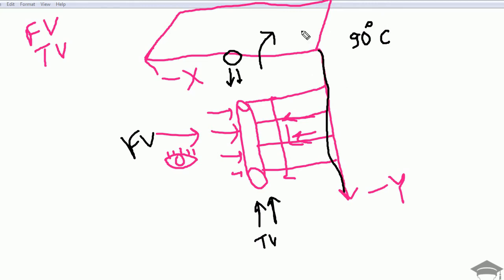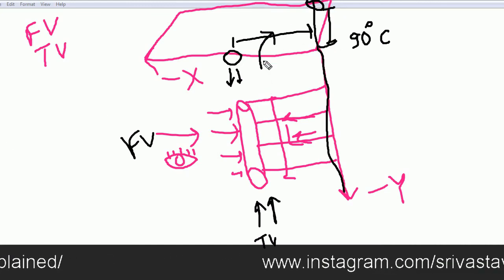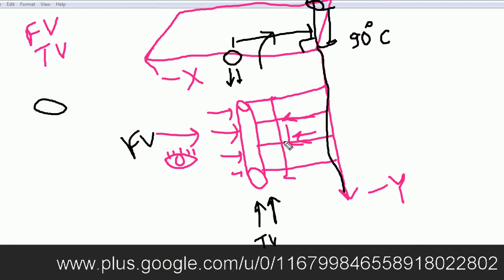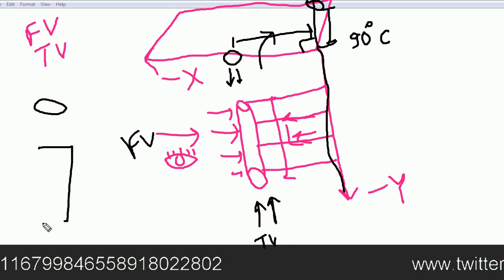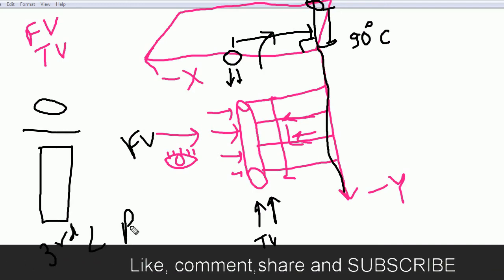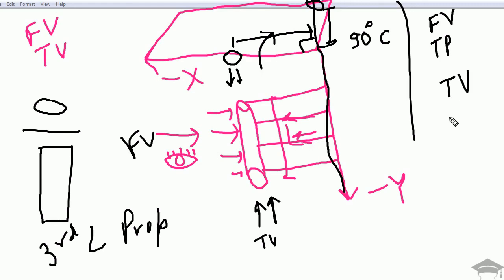When we rotate the top view plane 90 degrees clockwise, the top view comes above. This distance equals this distance, and the circle appears up here. The projected rectangle comes below. So the summary is: for first angle projection, front view is at the top and top view is at the bottom; for third angle projection, top view is above and front view is at the bottom.